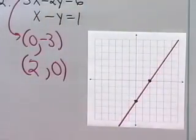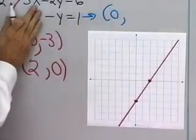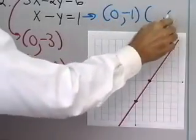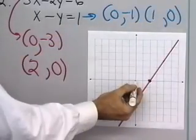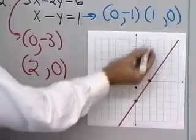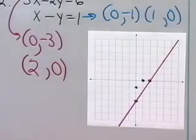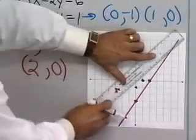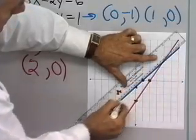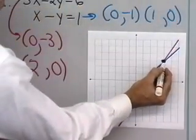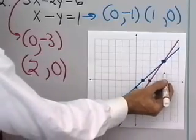Now I'll graph my other equation. When x is equal to 0, y is negative 1. And when y is equal to 0, x is equal to 1. So x is 0, y is negative 1, and x is 1, y is 0. Let's draw a line between those two points. It looks like they intersect right here at x equal 4, y equal 3.